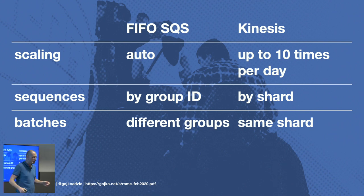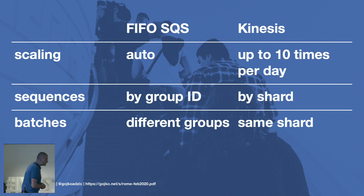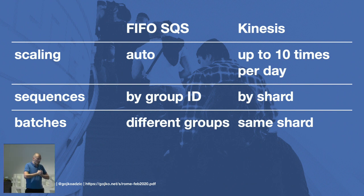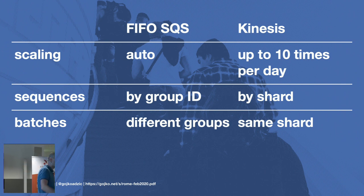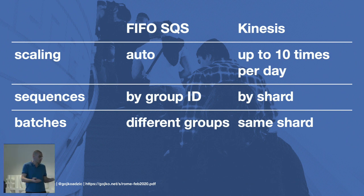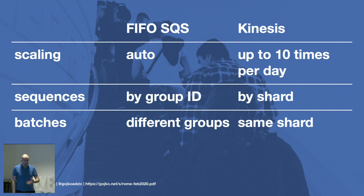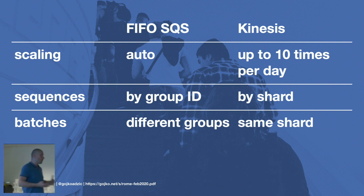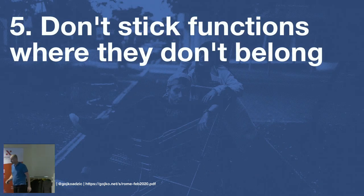Kinesis does not scale automatically — you can scale it up to ten times a day. It's stream-based and invokes one Lambda function per shard. If you set up five shards, you'll never have more than five functions processing at the same time. Kinesis sends messages from the same shard to a single function. SQS is queue-based, invokes as many Lambdas as it can, and will never send data from the same message group to a Lambda simultaneously. These two mechanisms give completely different response times depending on your batching and usage patterns.